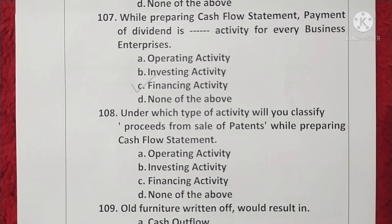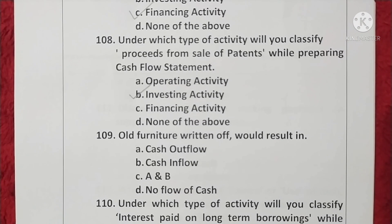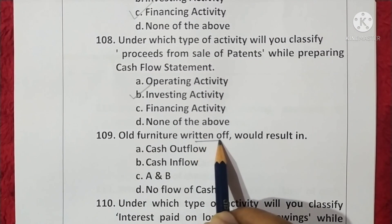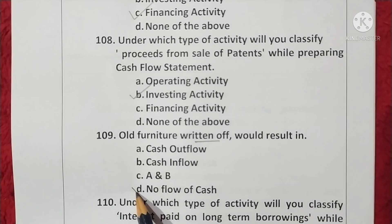Question 108. Under which type of activity will you classify proceeds from sale of patent while preparing a cash flow statement? Patent is an asset, so it is classified as an investing activity. Option B is correct. Question 109. All furniture written off would result in no flow of cash. Option D is correct.